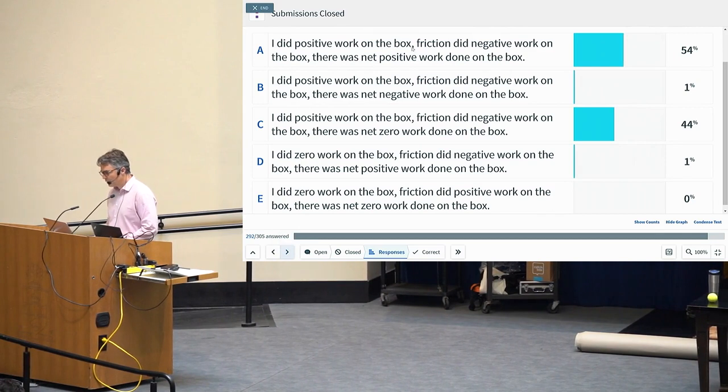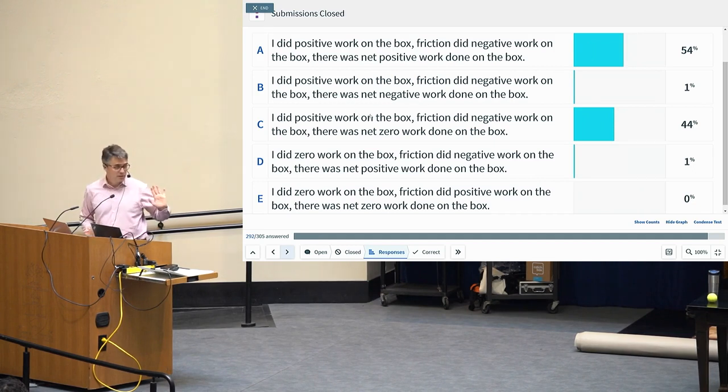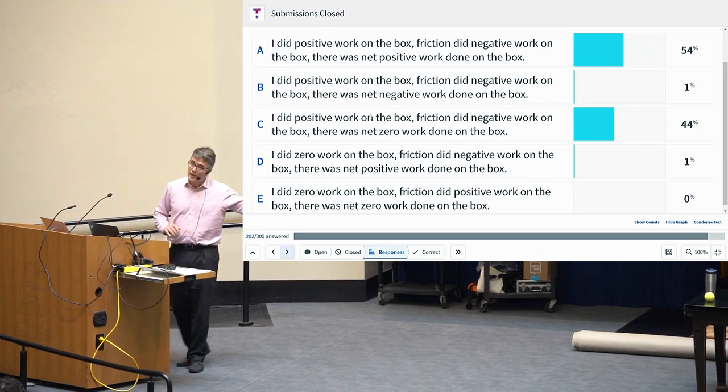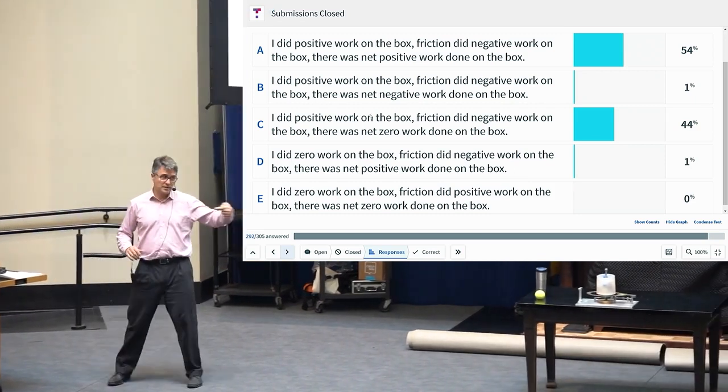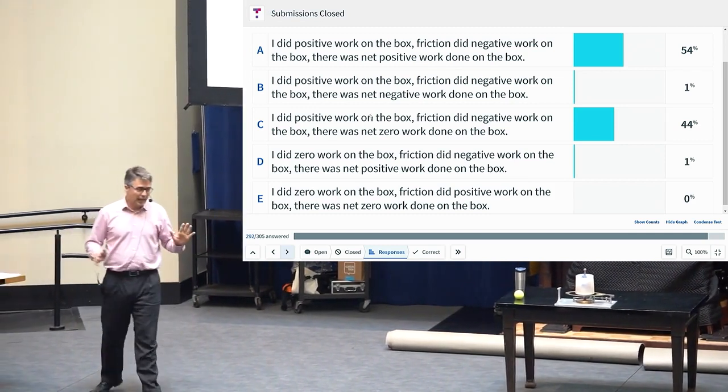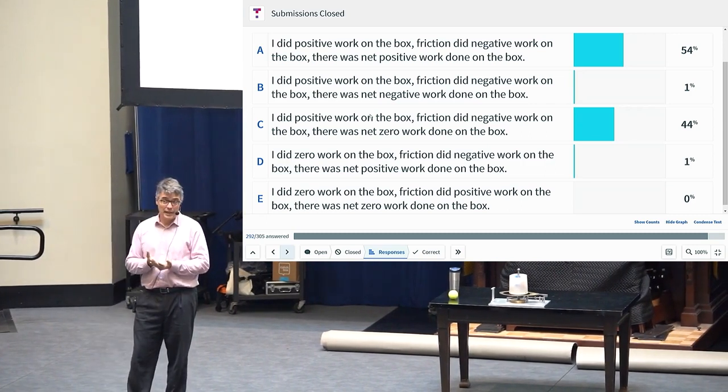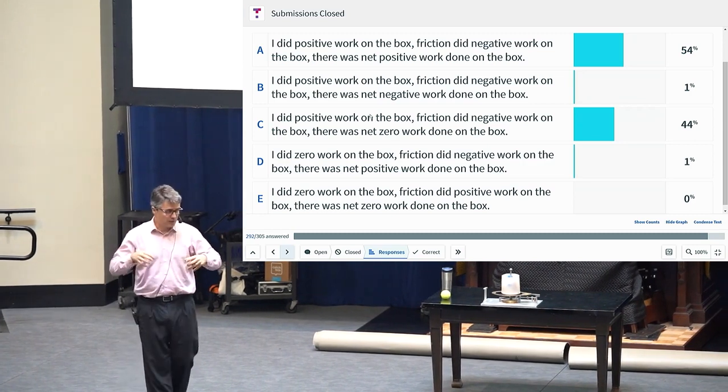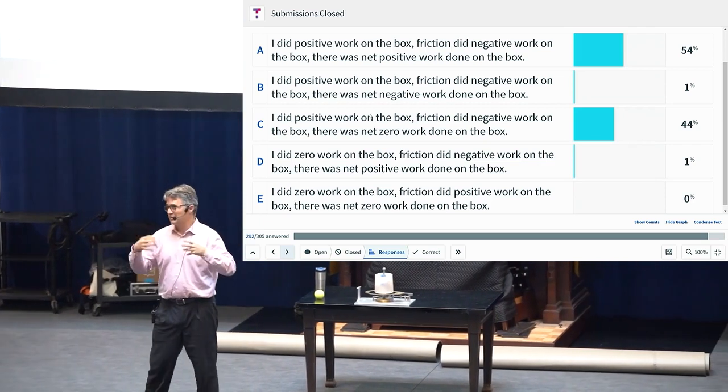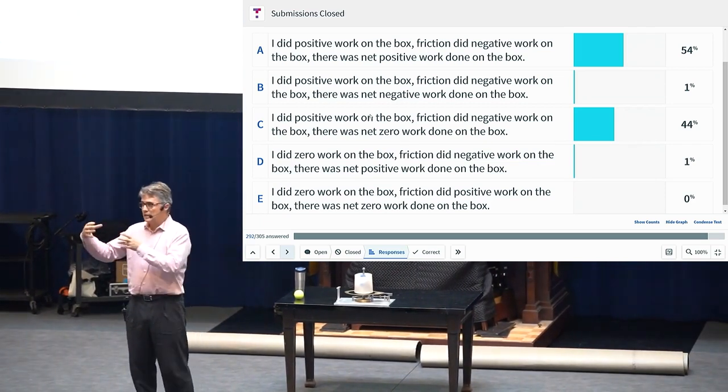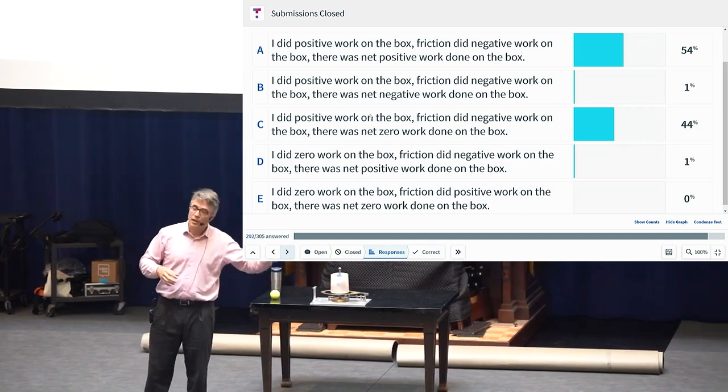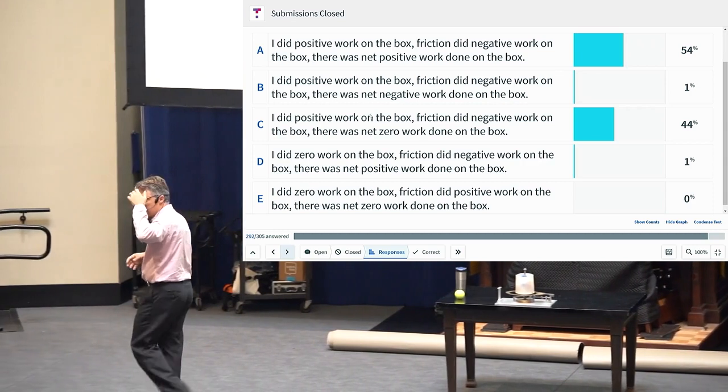I did positive work on the box. A is friction did negative work on the box, and there was net positive work done on the box. So I think most people agree that I did positive work on the box as my force was in the direction of sliding, and friction did negative work on the box because it was in the opposite direction of sliding. So this is about net work, and I think the idea with net work is that it's equal to the change in kinetic energy.